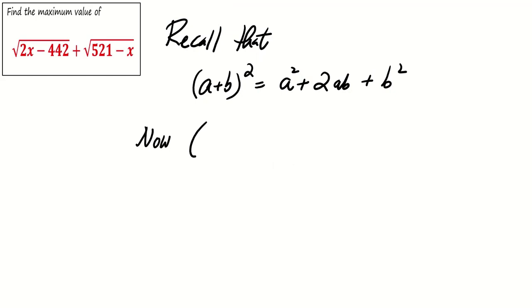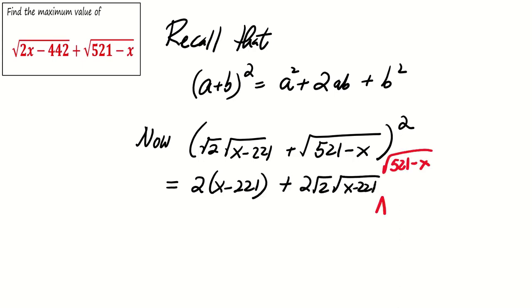Now, when we square the expression square root 2 square root of x minus 221 plus square root of 521 minus x, we get 2 times x minus 221 plus 2 times square root 2 times square root of x minus 221 times square root of 521 minus x plus 521 minus x.